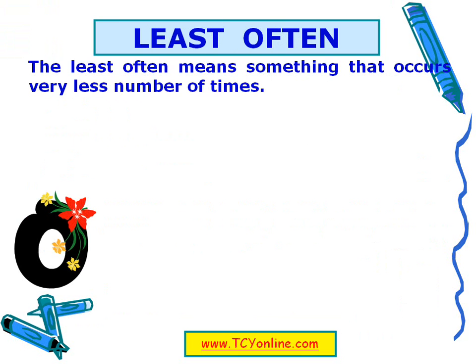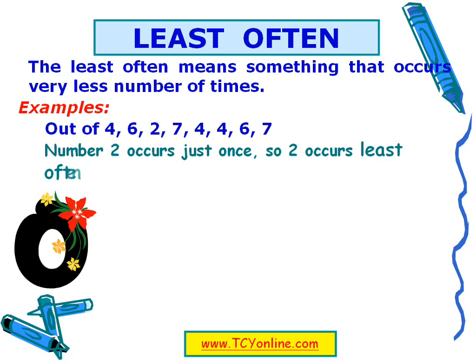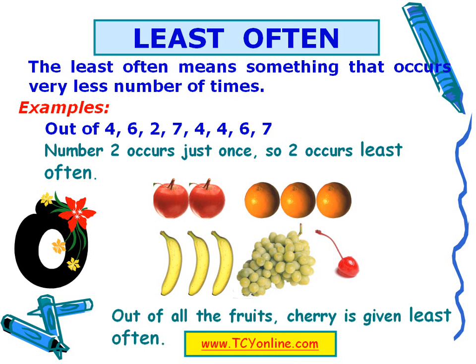Now let's look at the definition of 'least often.' Least often means something that occurs a very small number of times. For example, out of these numbers, two occurs just once, so two occurs least often. Similarly, out of these fruits, cherry is occurring the least number of times, so we will say that it is least often among all the fruits.